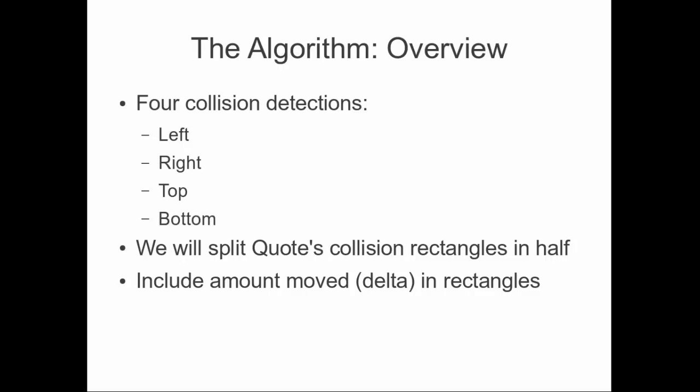There are going to be four collision detections: left side, right side, top, and bottom. If we collide on the left side, we shift right; if we collide on the right side, we shift left. We check in the direction we're moving first — so if we're moving to the right, we do right before left. That's the important part.